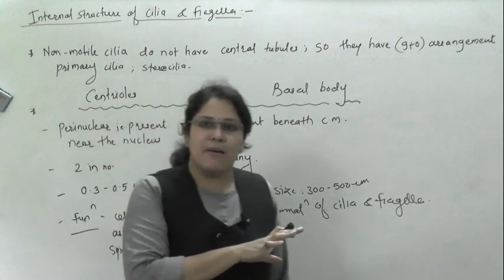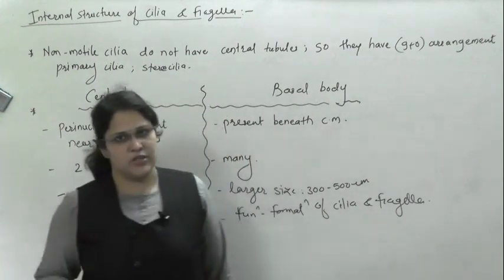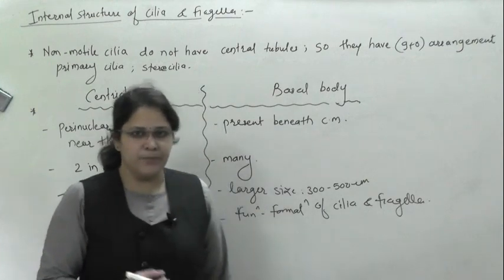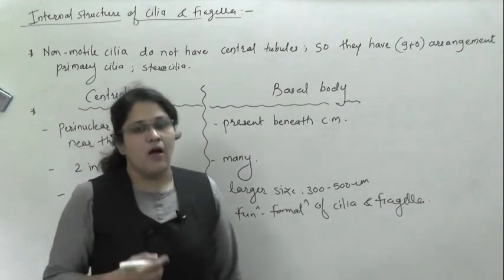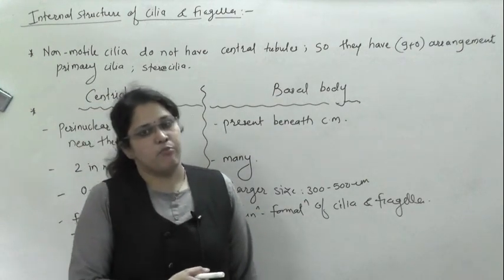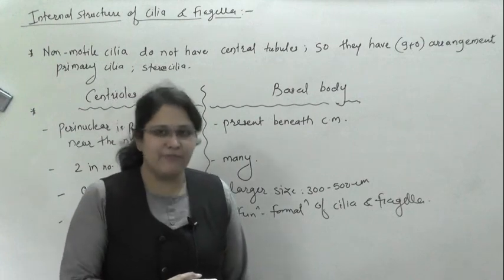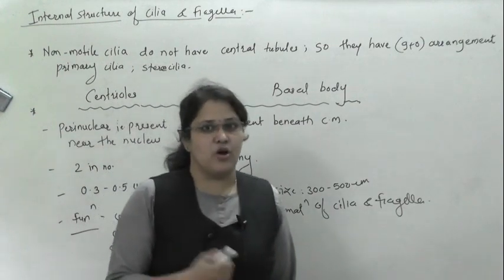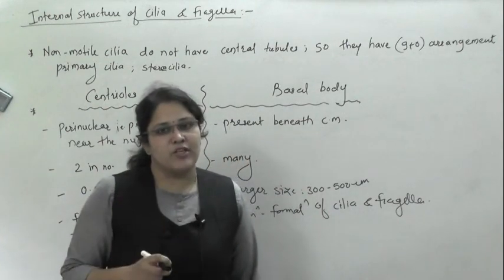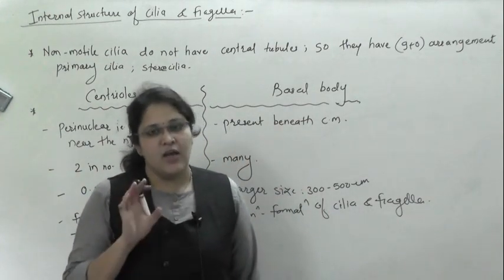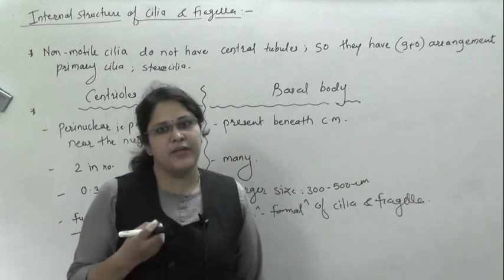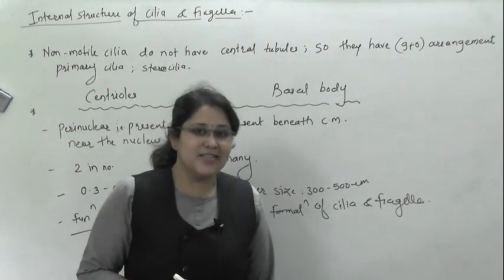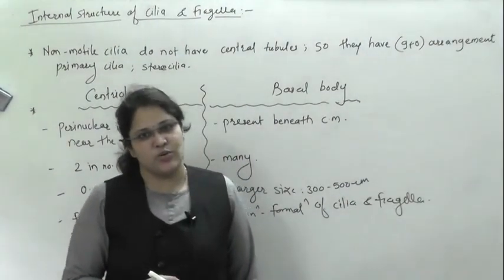This is all about cilia and flagella — this much information is more than enough. You can also read your NCERT. Today we completed one important cell organelle, that is cilia and flagella. In the next class, we will start the structure of the nucleus — again, an important part, the brain of the cell.